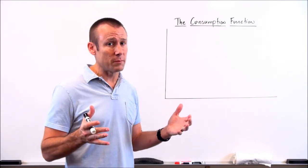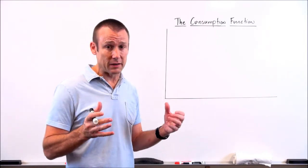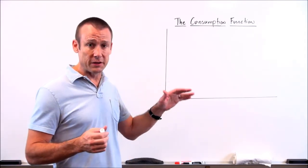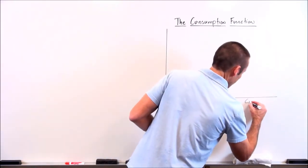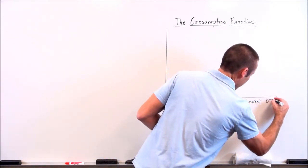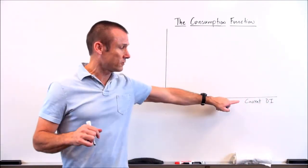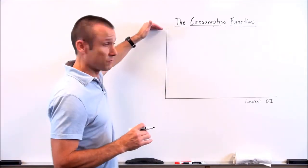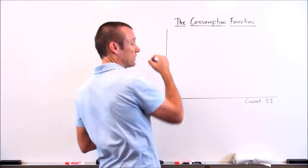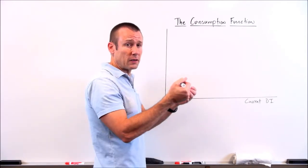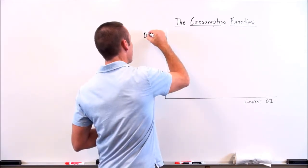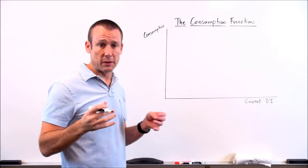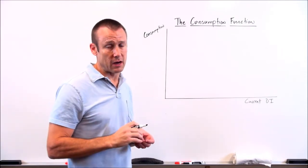But this is not a supply or demand curve, or an aggregate demand or aggregate supply curve. Since it doesn't have supply or demand in it, we're going to do it just the way a mathematician would — we're going to put the independent variable, current disposable income, right here on the horizontal axis. What are we going to put on the vertical axis? Consumption — sometimes called aggregate consumption spending or aggregate household spending.